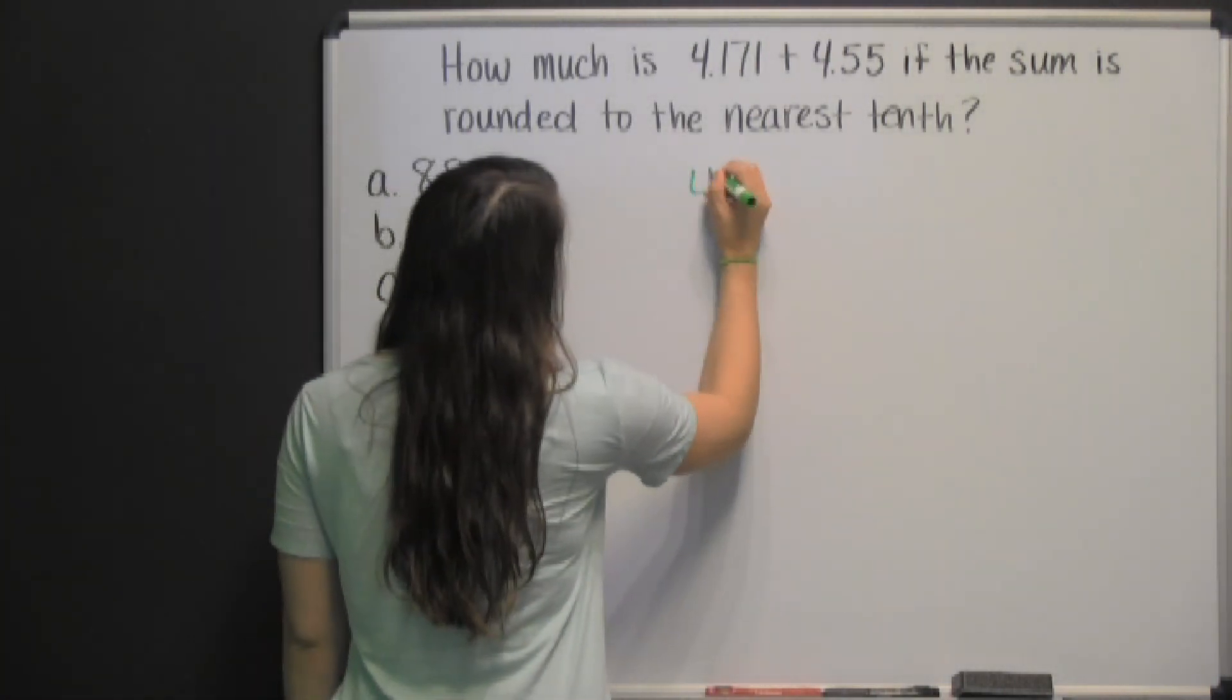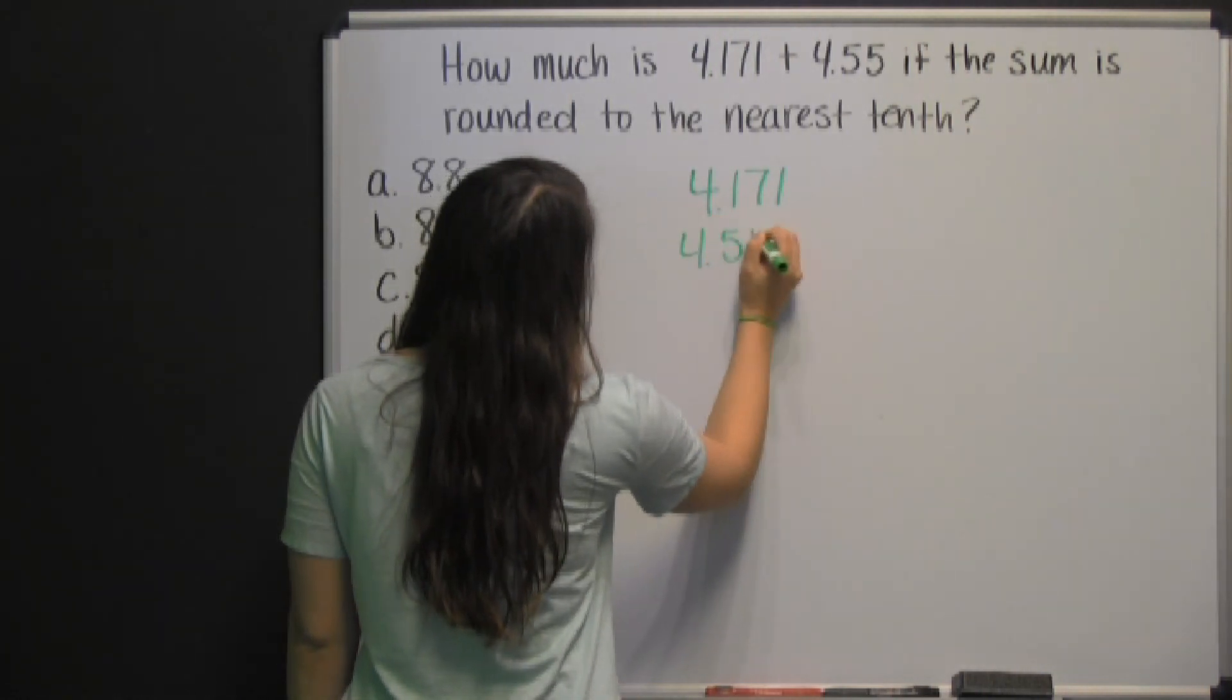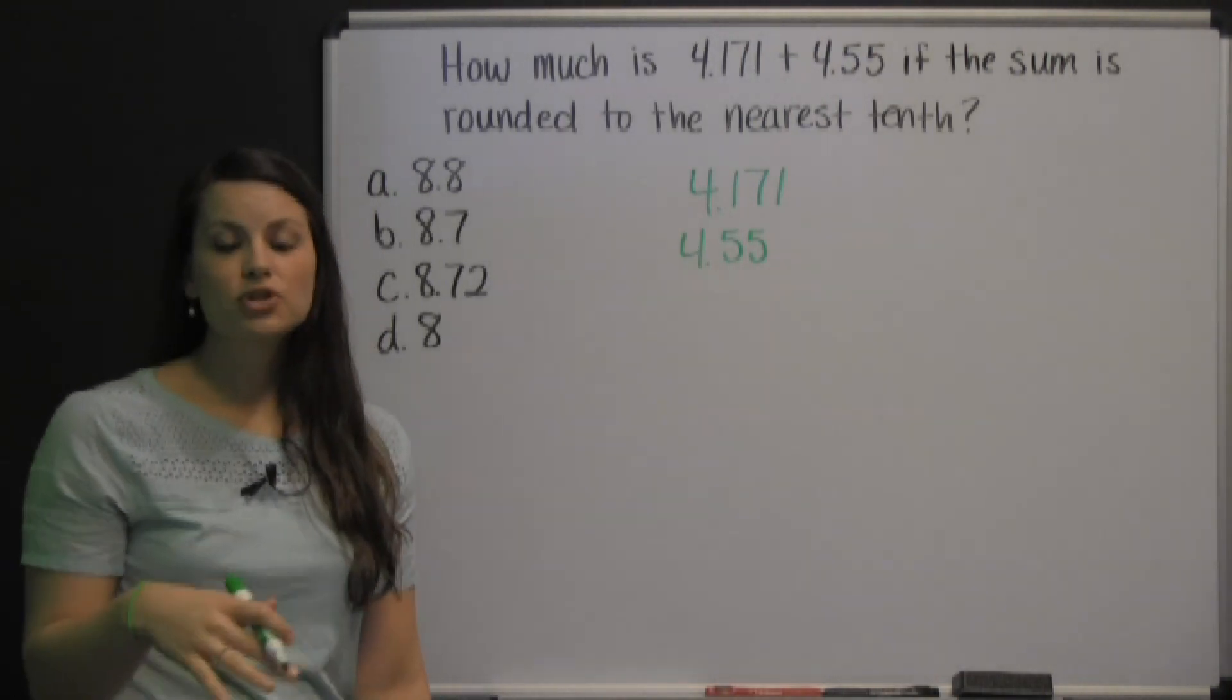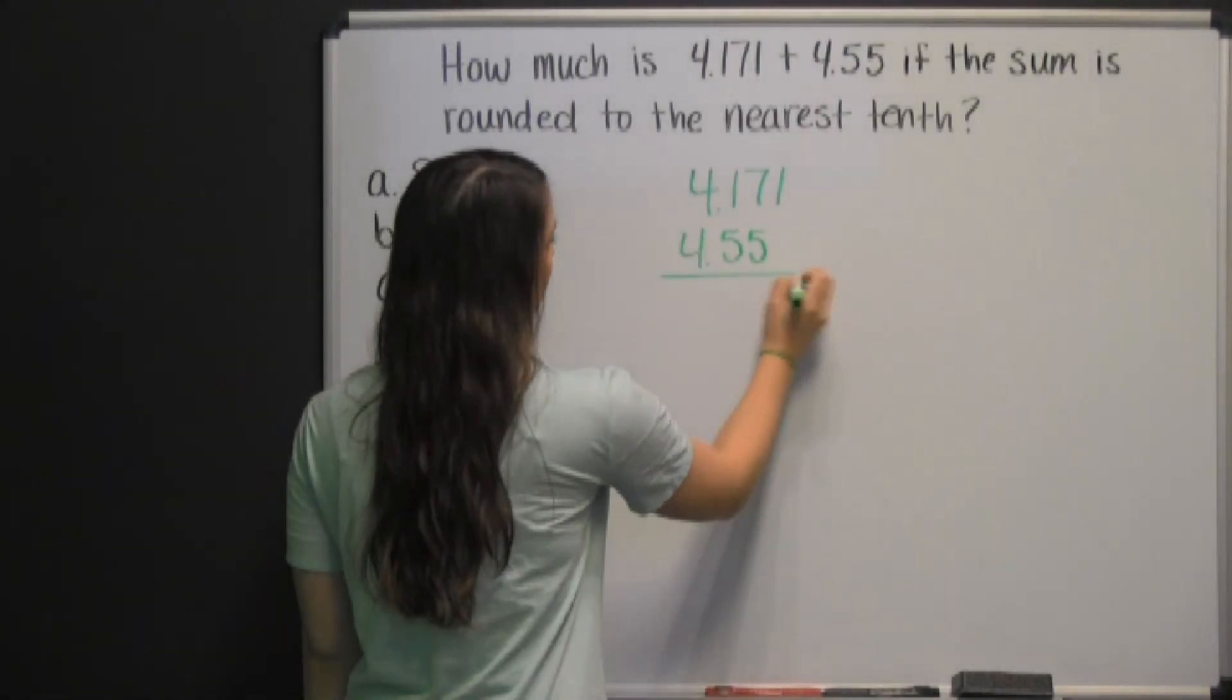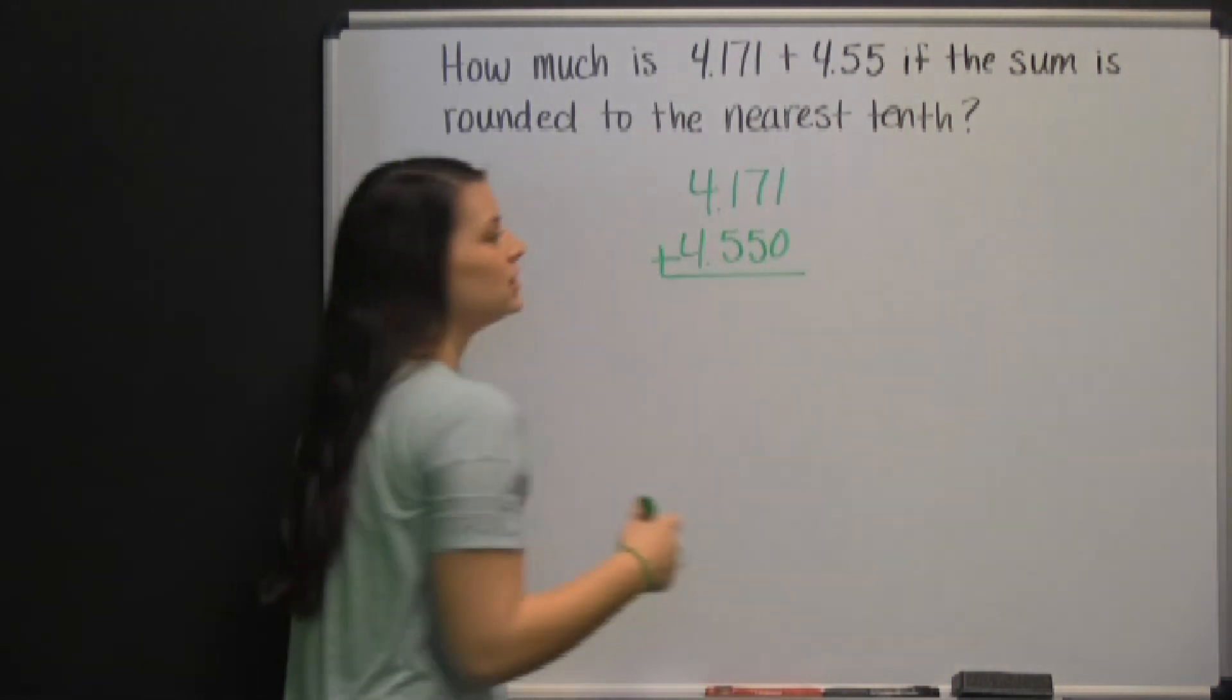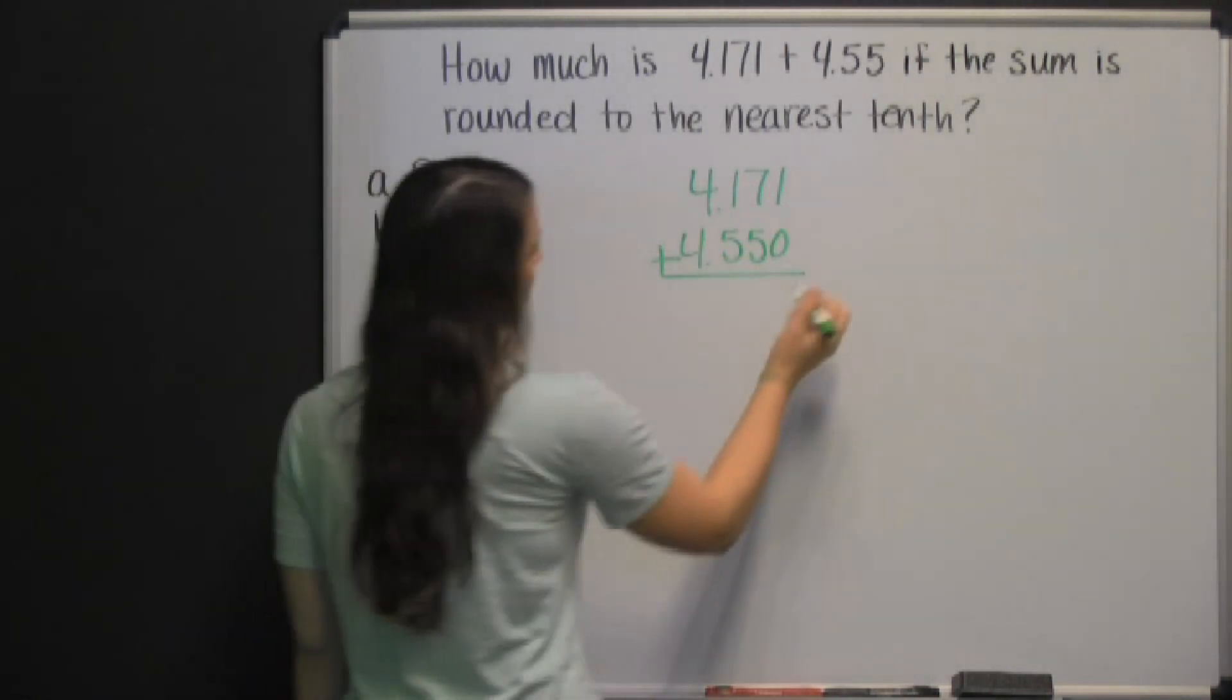We start by adding 4.171 and 4.55. When you add or subtract decimals, make sure that your decimals are lined up. What you can do is add zeros to the end of any number after a decimal. That way it helps you line them up.